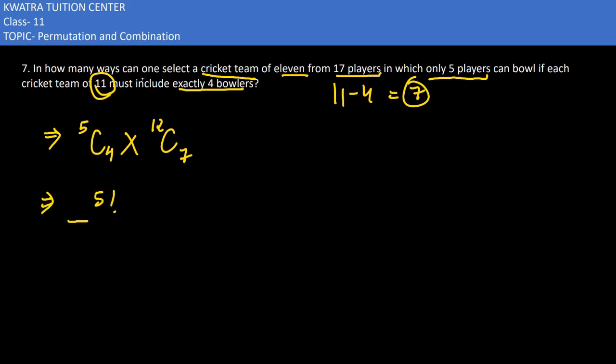Now, we have 5 factorial over 4 factorial times 1 factorial, times 12 factorial over 5 factorial times 7 factorial. The 5 factorials cancel.